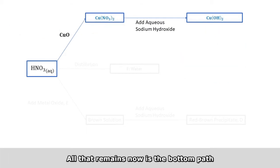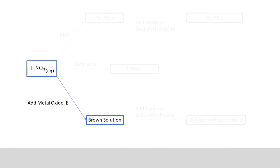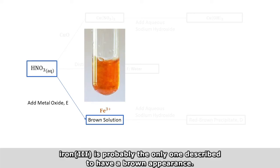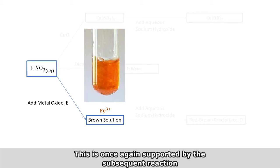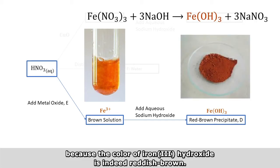All that remains now is the bottom path, which also starts with the addition of a metal oxide. So this creates a brown solution. And in grade school textbooks, iron 3 is probably the only one described to have a brown appearance. And this is once again supported by the subsequent reaction, because the color of iron 3 hydroxide is indeed reddish brown.